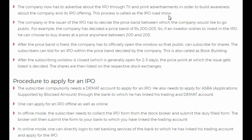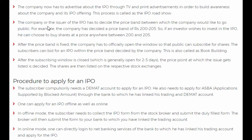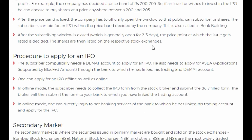After the draft red herring prospectus, there will be an IPO roadshow. The company or the issuer of the IPO has to decide the price band within which the company would like to go public. For example, the company has decided a price band of 200 to 205. So one share of the company will be listed through an IPO for 200 rupees to a maximum of 205 rupees. If an investor wishes to invest in the IPO, he can choose to buy shares at a price anywhere between 200 and 205.